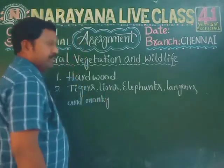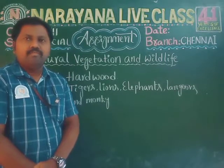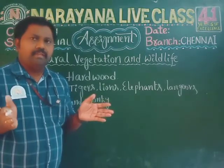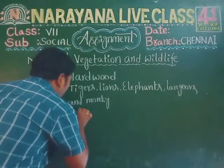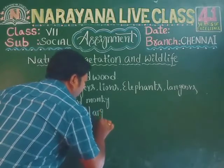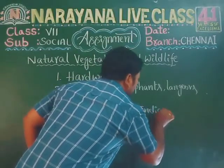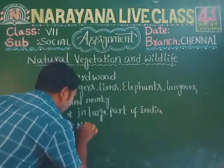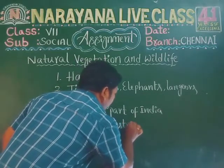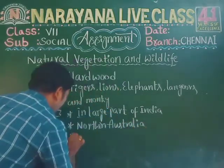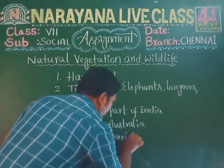Let's take the third question. In which part of the world are tropical deciduous forests found? The answer is: in large parts of India, northern Australia, and Central America. So the third question answer covers those three regions.